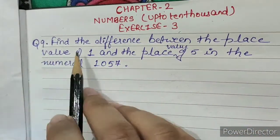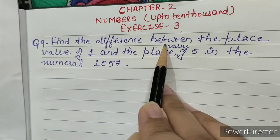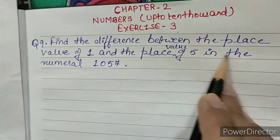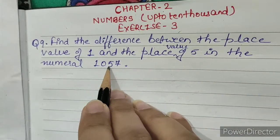Question number 9: Find the difference between the place value of 1 and the place value of 5 in the numeral 1057.